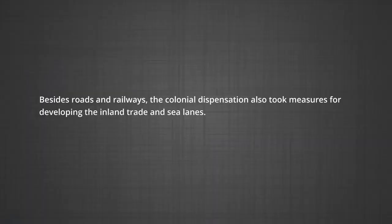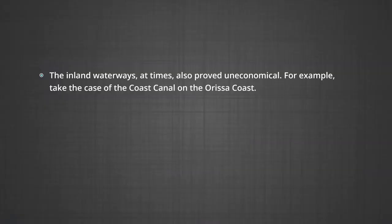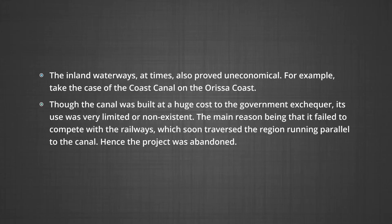Besides roads and railways, the colonial dispensation also took measures for developing inland trade and sea lanes. However, these measures were far from satisfactory. The inland waterways at times also proved uneconomical. For example, take the case of the coast canal on the Odisha coast. Though the canal was built at a huge cost to the government exchequer, its use was very limited or non-existent. The main reason being that it failed to compete with the railways, which soon traversed the region running parallel to the canal. Hence the project was abandoned.